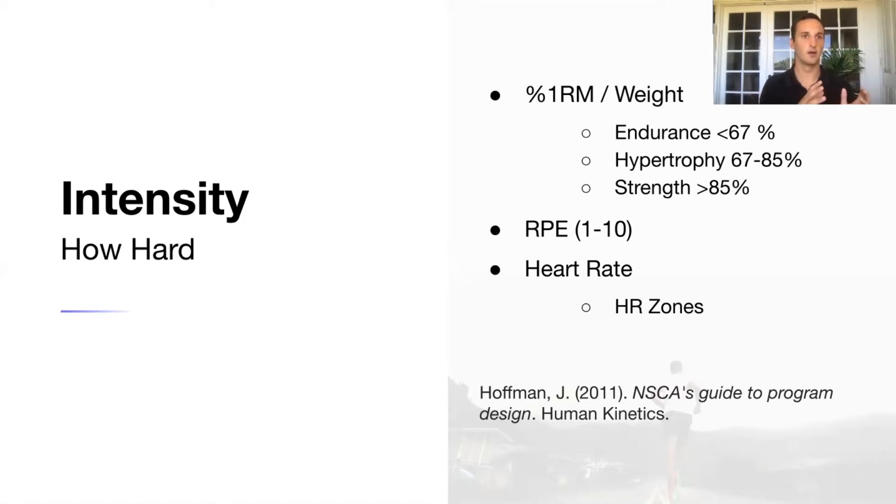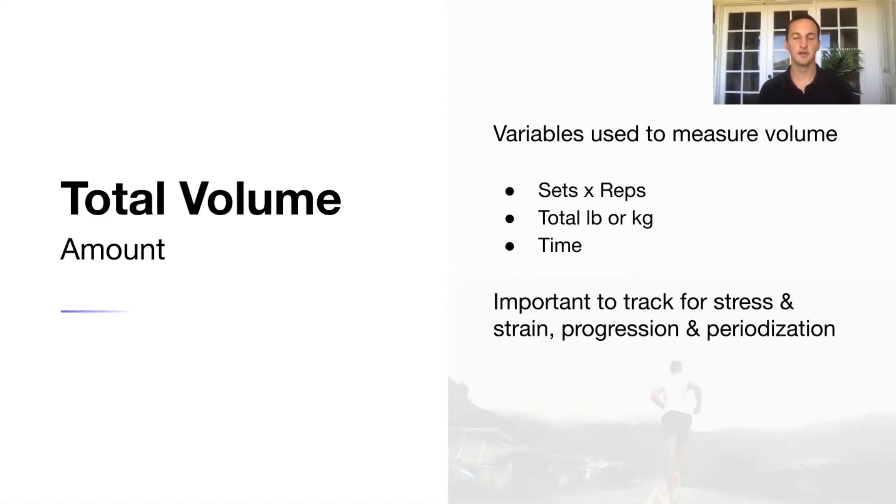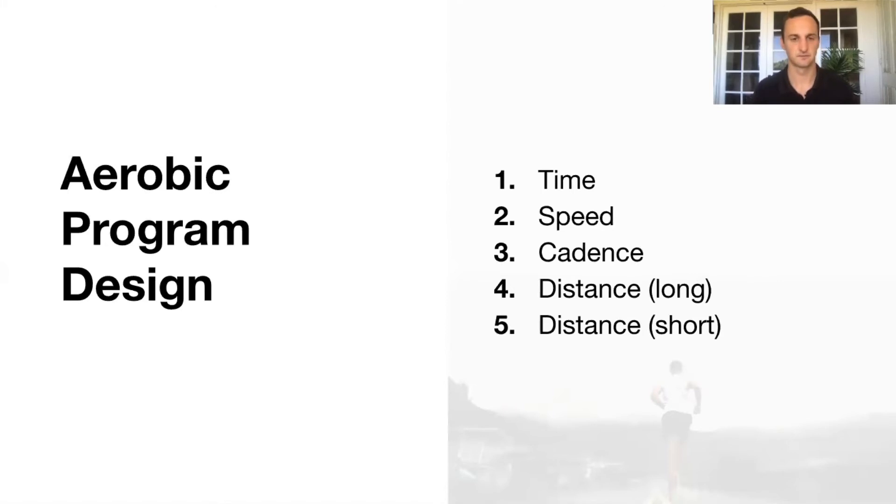Another way to track intensity is through RPE. And then for endurance program prescription or just for conditioning, cardio-type loads, heart rate is a really good way to measure intensity, and more specifically heart rate zones. Total volume is the amount. Some variables used to measure volume: you have your sets and reps, so you can multiply the sets times how many reps they did, combine that with their total weight, then you'll know their total pounds or kilograms in that training session. You can also quantify total volume by time. This is really important to track for stress and strain, progression, as well as periodization.